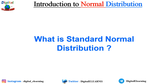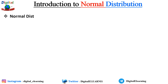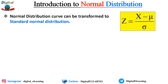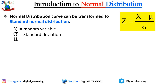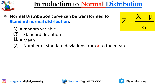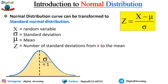The normal distribution can be transformed to a standard normal distribution by the formula: Z = (X − μ) / σ, where X is the random variable, sigma is the standard deviation, mu is the mean, and Z is the number of standard deviations from X to the mean. The standard normal distribution is a normal distribution with a mean of 0 and standard deviation of 1. The Z-score tells us how many standard deviations away from the mean each value lies, and any normal distribution can be converted to standard normal by turning individual values into Z-scores.